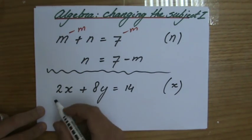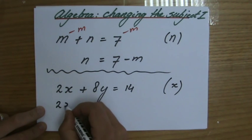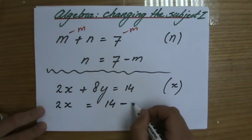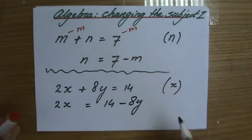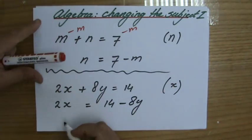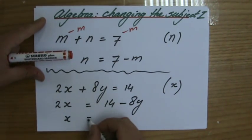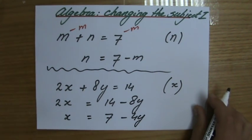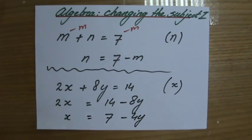Well, it doesn't say it like that yet, so I am going to manipulate it and say, 2x equals 14 minus 8y. Well, x is not the subject yet because it says 2x, and it has to say x, just 1x. So I am going to divide both sides by 2 now, so that is going to be 7 minus 4y. Now x is the subject, so that would be my answer.